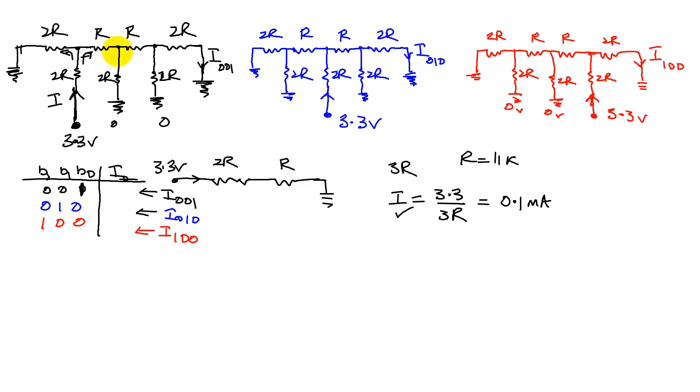And then when it comes here, the same thing happens, which is this is going to be 2R. So half goes here and half goes here. So we've halved it again. And eventually, it goes half here and half here. So what we see is that I001 has been halved three times, so it's going to be I divided by 8.